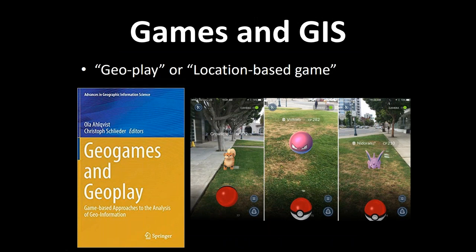So games and GIS — if you've never really considered the fit, it's a logical fit. In the academic research world, Ola Alvquist out of Ohio State has been a real leader in research on this idea of geo games. The title of his book: 'Game-Based Approaches to the Analysis of Geo Information.' How do you use games to understand geography and places? Some of his early work was on human-environment relationships and games around that — like if you have resources for a city, you have to make decisions about how much resource to allocate.